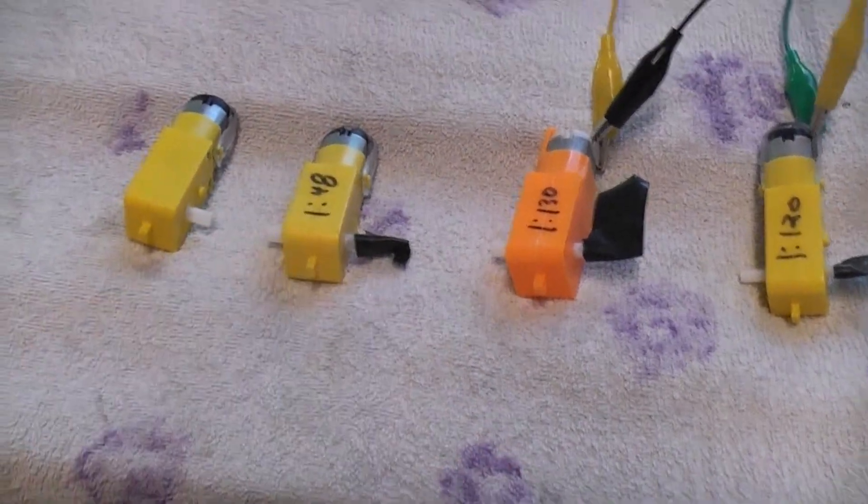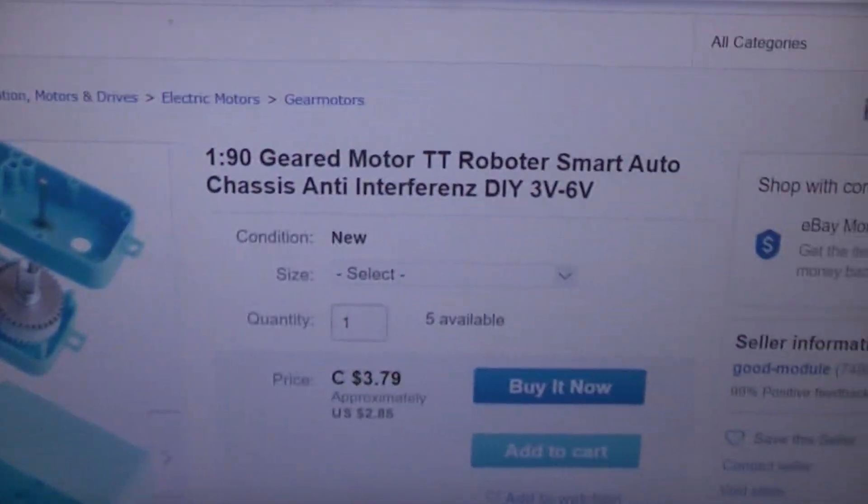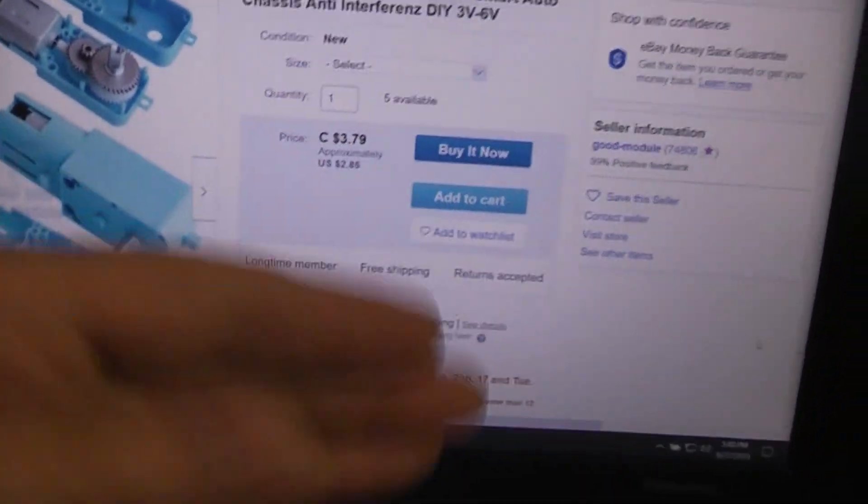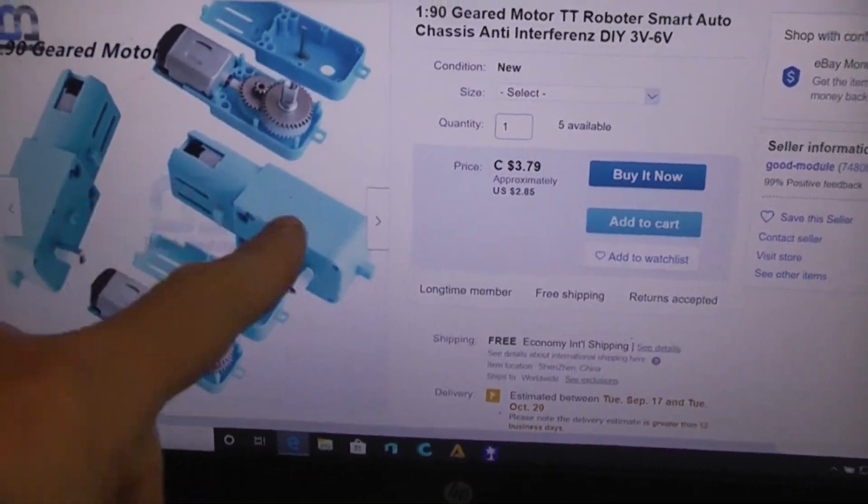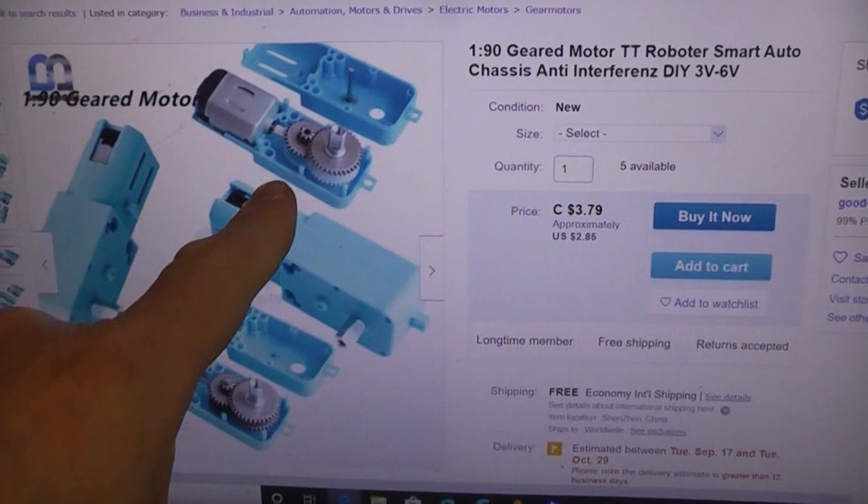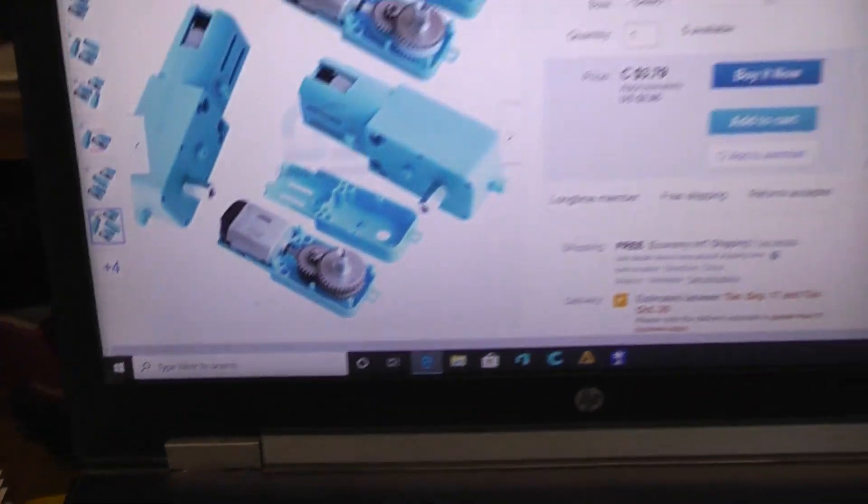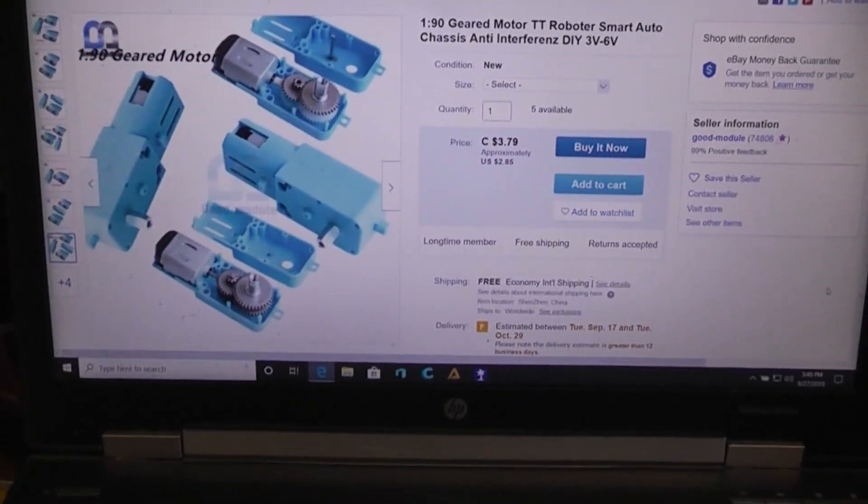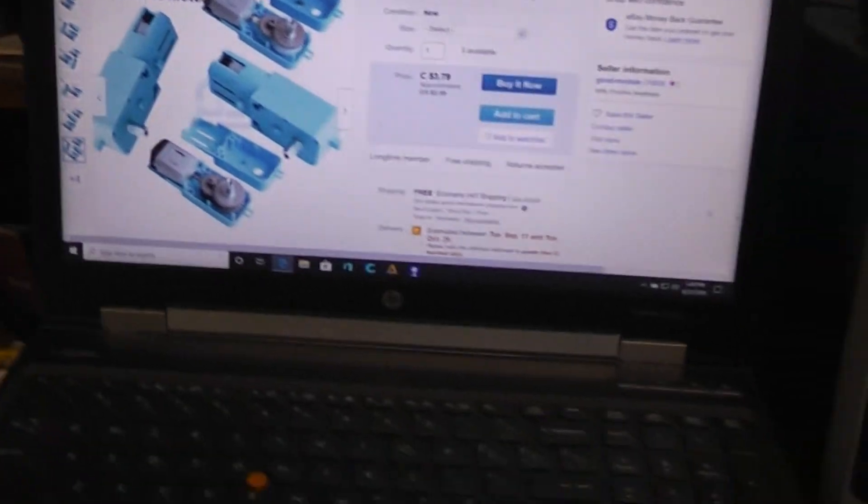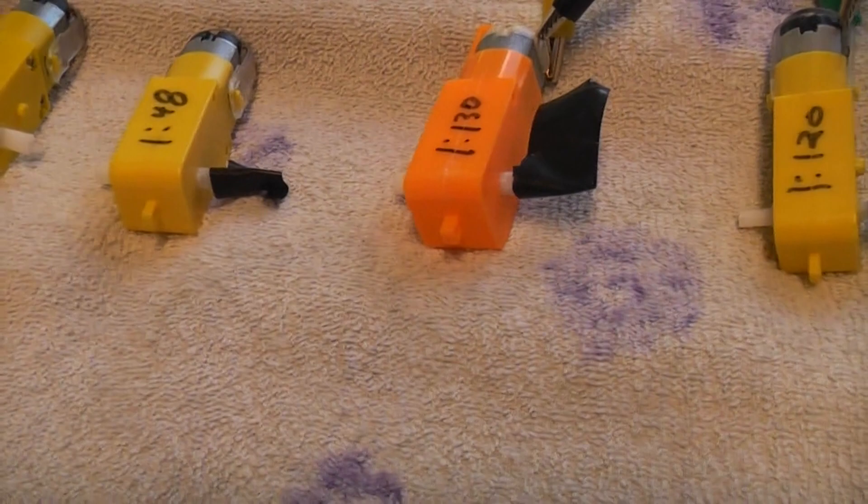After the 48 to 1, there's also a new one available that's 90 to 1, so it would be almost twice as slow or twice as powerful. Interesting thing about it is you can order it as partial metal gear or full metal gear, and it looks like the same size case so it would probably work in this project. I don't have one to demonstrate, but it would turn half as slow as this one.